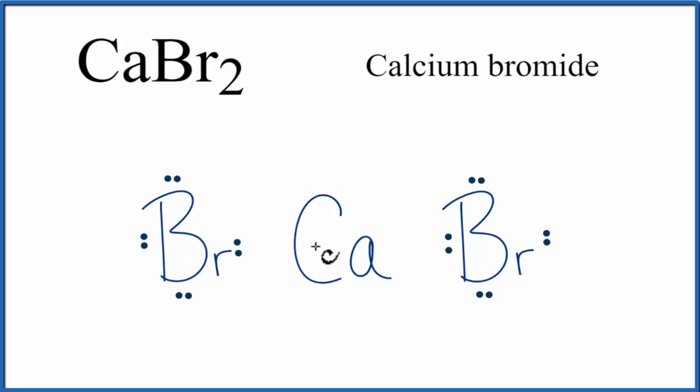Calcium, it lost two valence electrons, and electrons are negative. So it lost two negative charges, that makes it have a 2+ charge.